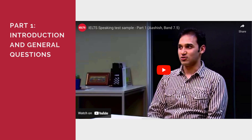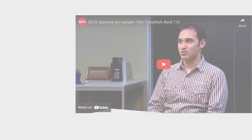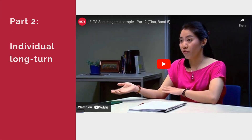In Part 2, the candidate is given a task card with a topic and four specific points to talk about. Three of these points usually focus on describing something, and the final point asks for reasons. The candidate has one minute to prepare and then should talk for one to two minutes. The examiner might then ask one or two more questions. Watch sample Part 2.